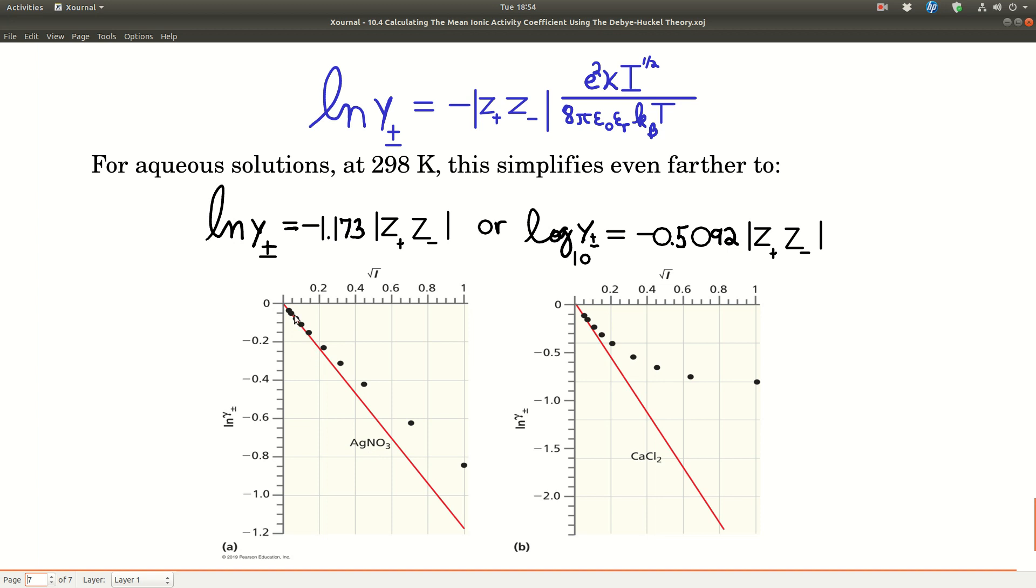For silver nitrate, it's pretty good up to square root of ionic strength about 0.1. It's linear, it follows this line. After that, it starts to deviate. For more highly charged species like calcium chloride, it deviates around less than 0.1, about 0.05 or a little past that.